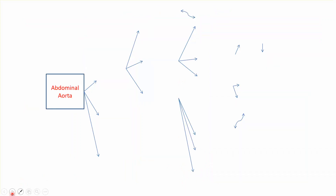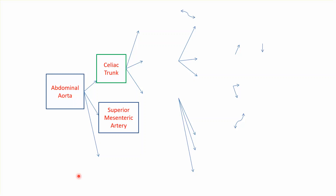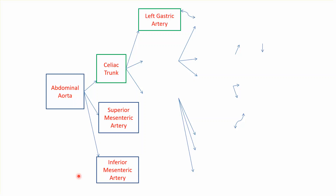This is a schematic diagram showing the abdominal aorta giving the celiac trunk, superior mesenteric artery, and inferior mesenteric at L3. The celiac trunk gives branches to three major organs: to the stomach along the lesser curvature it gives the left gastric, the common hepatic going to the liver, and the splenic artery going to the spleen.